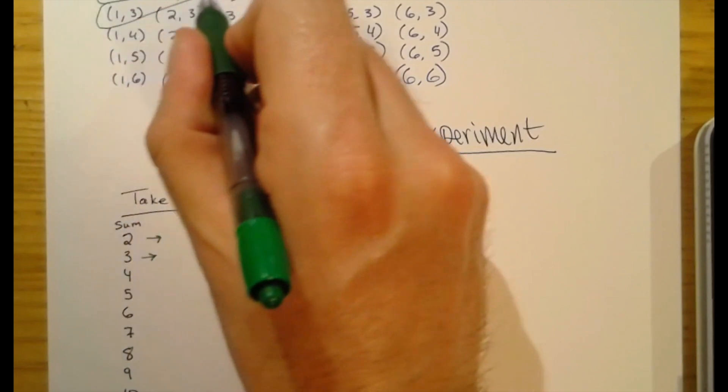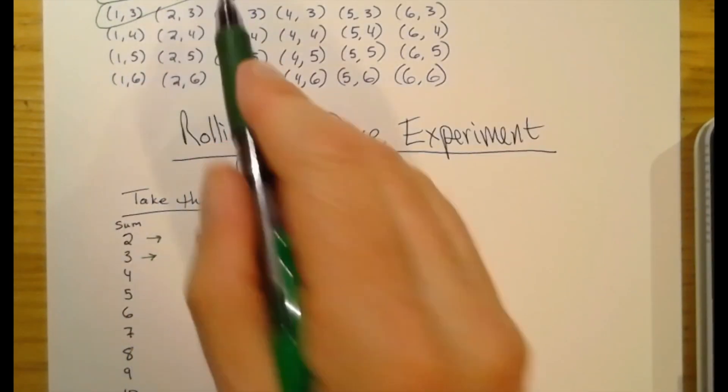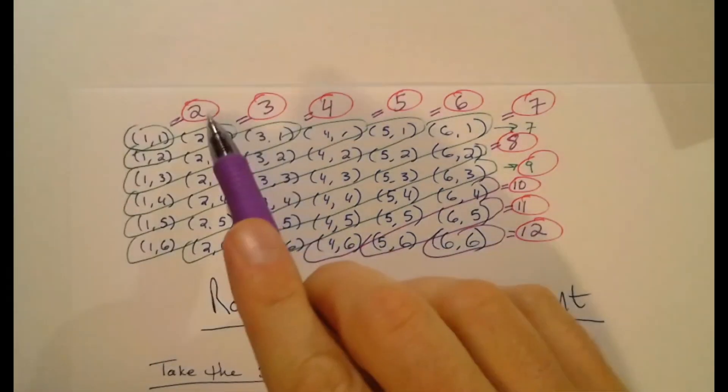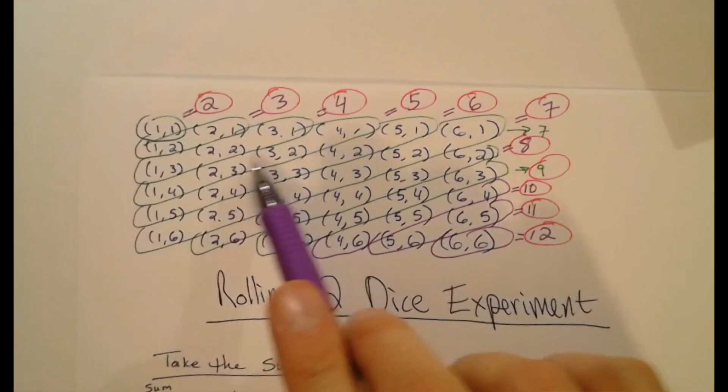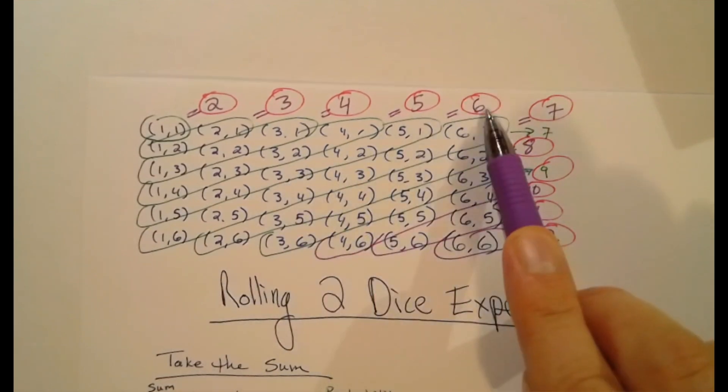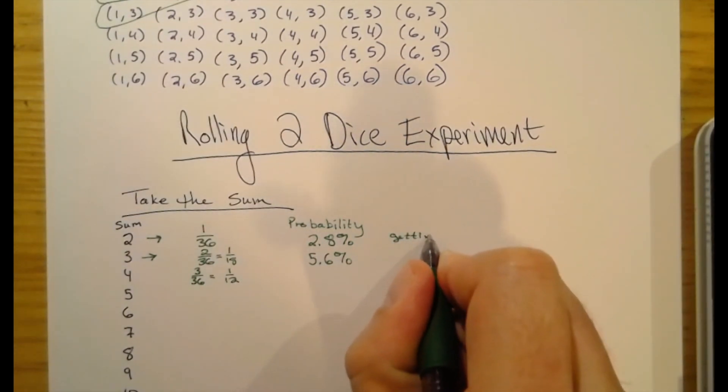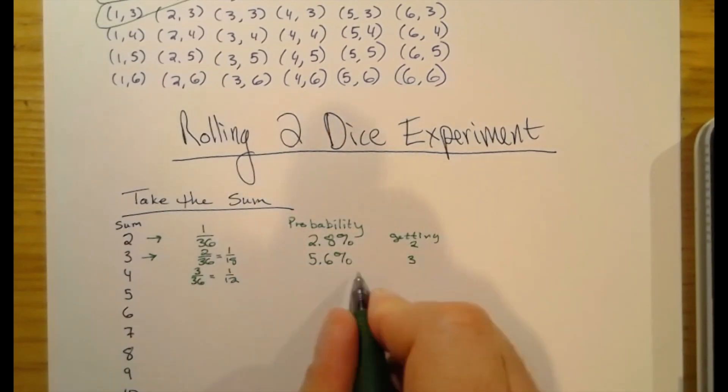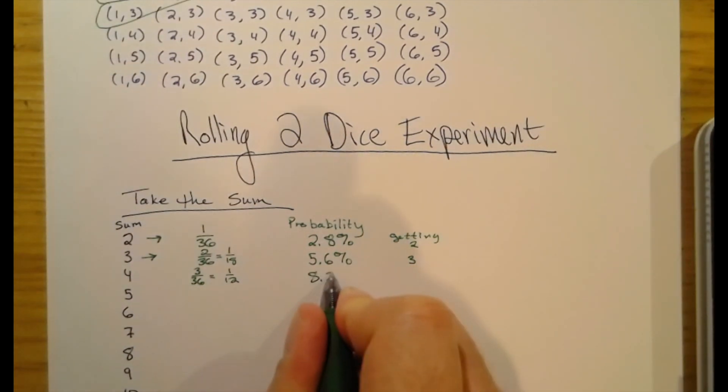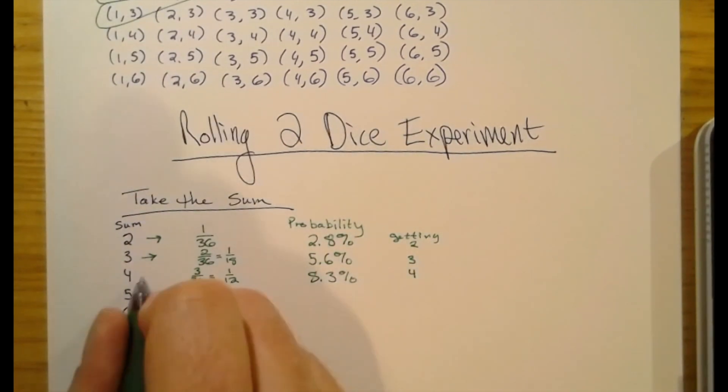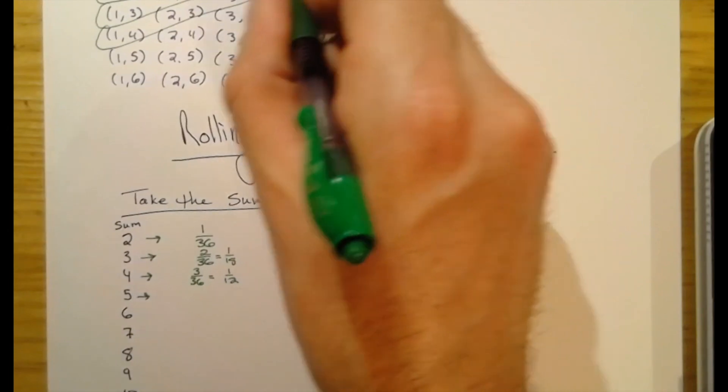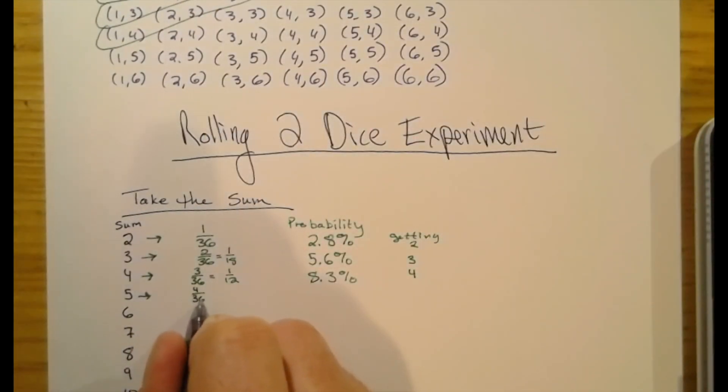And then the things that add up to four, we got 1, 3, 2, 2, and 3, 1. What we notice is if we look at a diagonal here that goes from a lower left-hand corner to an upper right-hand corner, all of those entries add up to the same thing. So we have 3 out of 36, which is 1/12. And this is the probability of getting the sum of 4. That's 8.3%. And so on and so forth. What we're going to notice here, if we take a look at all the ones that add up to 5, we have 4 of those, that's 11.1%.